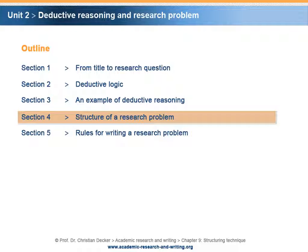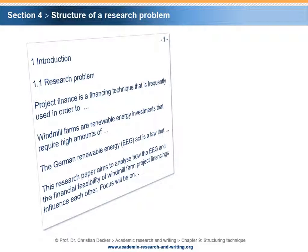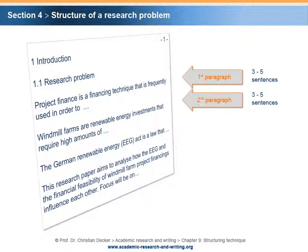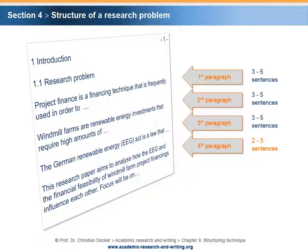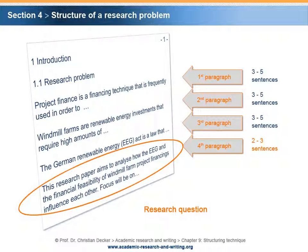Section 4 – Structure of a research problem. According to our example, the structure of the research problem could look as follows. In the first paragraph, the term Project Finance is covered. In the second paragraph, Windmill Farms are introduced as typical renewable energy investments. In the third paragraph, the German Renewable Energy Act is briefly introduced. The fourth and final paragraph postulates the research question. Remember, the subchapter Research Problem always ends with the research question. It is also important to set a maximum length for each paragraph.